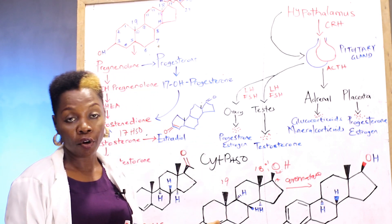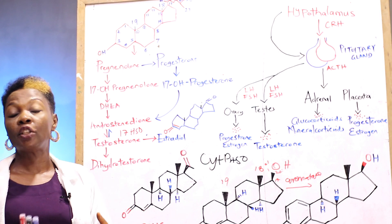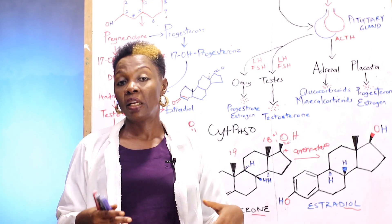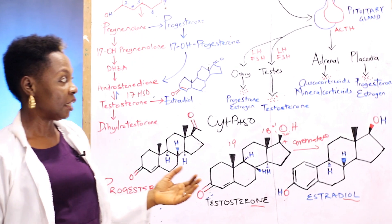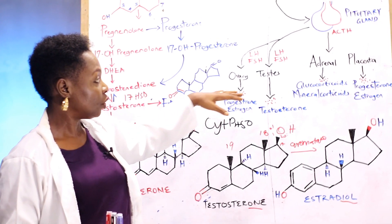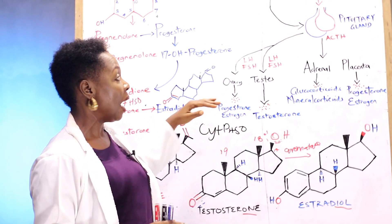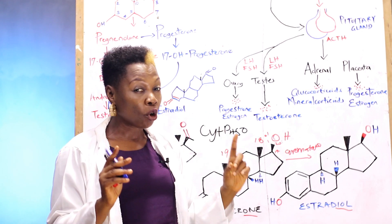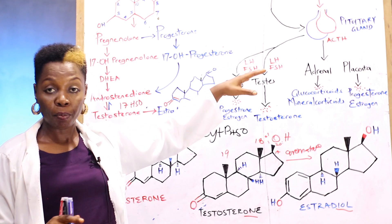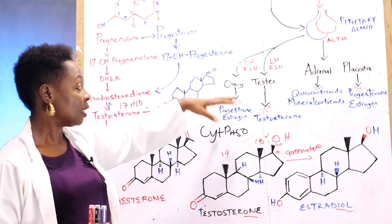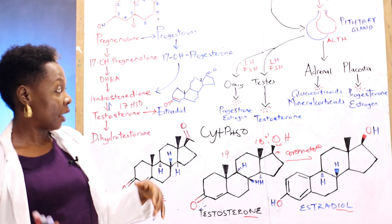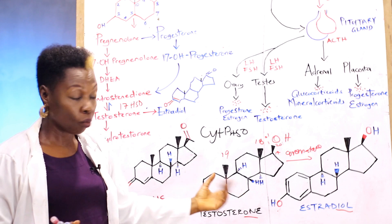The anterior lobe and the posterior lobe secrete different hormones. The posterior lobe secretes just two hormones: oxytocin and vasopressin. We will be concentrating on the hormones of the anterior pituitary gland and the reproductive hormones. The hormones secreted from the pituitary gland which affect the ovaries, the testis, the adrenal gland, and the placenta can also be called steroid hormones.